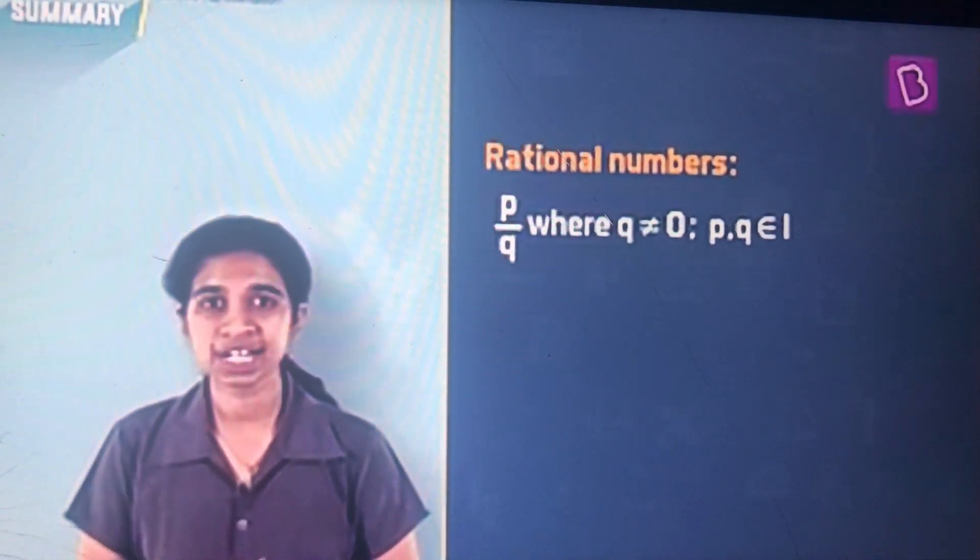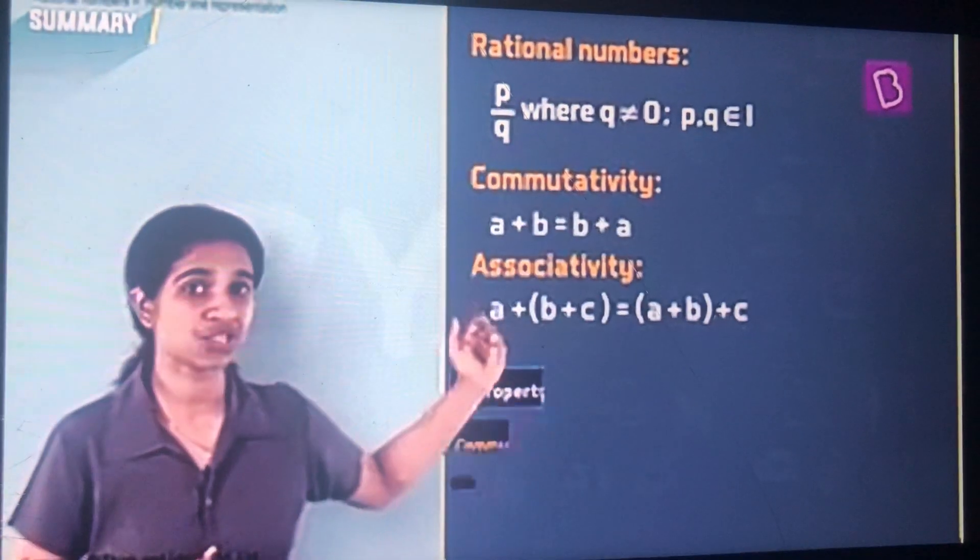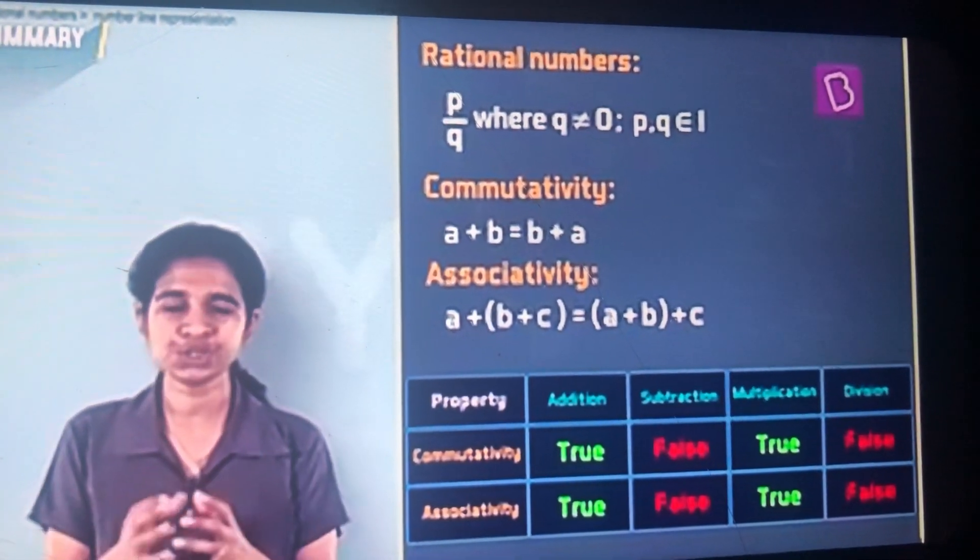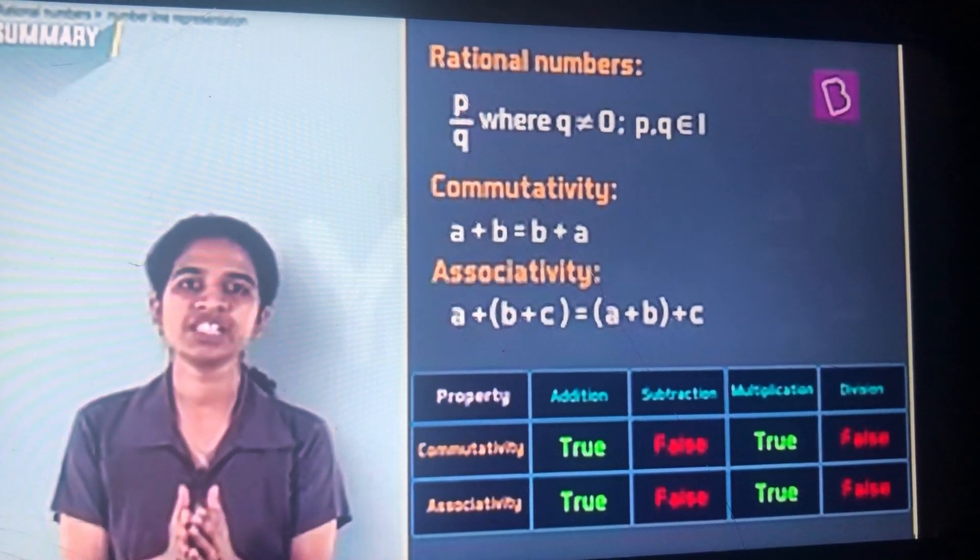The properties that are true for whole numbers and integers, the two properties, commutativity and associativity, are also true for rational numbers. Because for these two properties, what we saw is that the group that a number belongs to does not matter, they are always true.